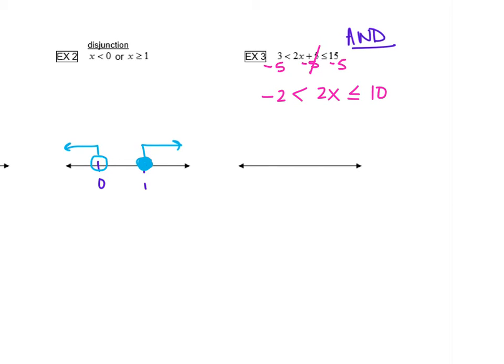And now go back to the middle where the x is. To get rid of the 2, we have to divide by 2. And you just have to remember, divide by 2 everywhere. Your 2's cancel. This leaves you with negative 1 is less than x, which is also less than or equal to 5.